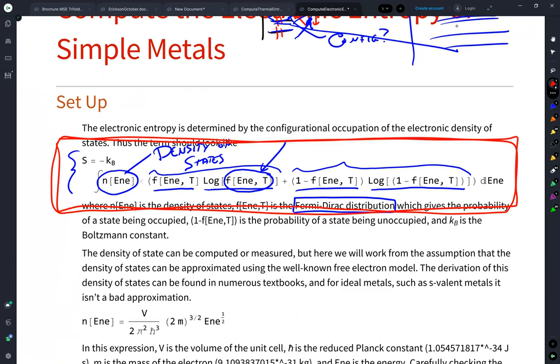In practice, we definitely know what the Fermi-Dirac distribution looks like. The density of states, that's a little more challenging. And you can measure the density of states through various spectroscopy techniques. You can compute it with density functional theory type methods or other quantum calculations.